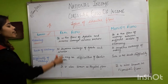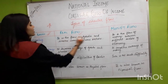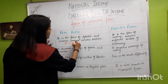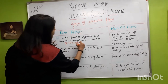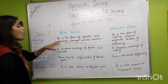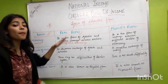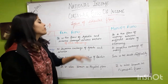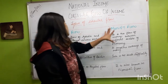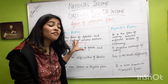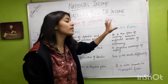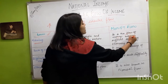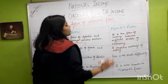Real flow is the flow of goods and services among the various sectors of the economy. Money flow, on the other hand, is the flow of money between the different sectors of the economy.